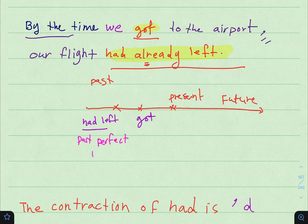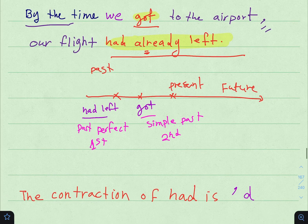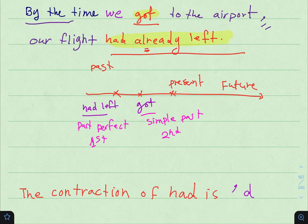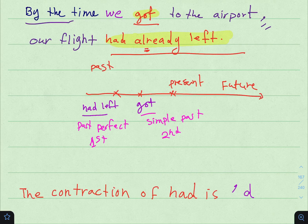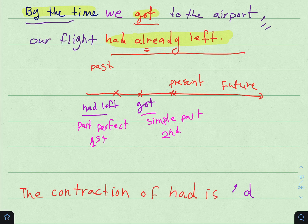Past Perfect happened first - حصل أولاً. Simple Past happened second - حصل ثانياً. We have two actions; the one which happened first is the Past Perfect and the other action happened after. As I said previously, we use some time expressions like by the time, already, before, after, ever, never, and until.